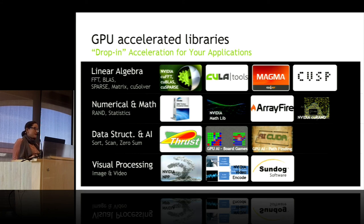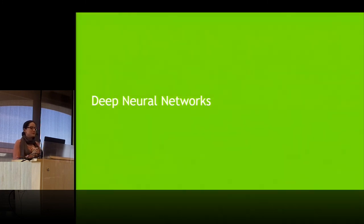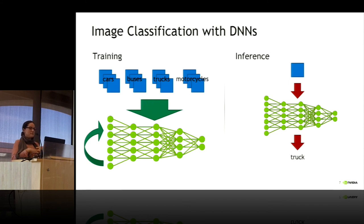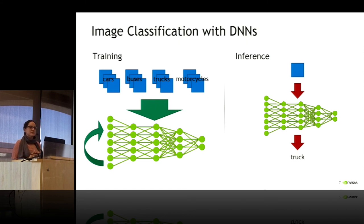Now, as far as vocabulary goes, I want to show you what a deep neural network is. Let's imagine I have a bunch of images — cars, buses, trucks, motorcycles — and I want to be able to recognize the next vehicle I see on the road. I take a lot of images, push them through a neural net, and train their weights from a machine learning perspective. That's the training part.